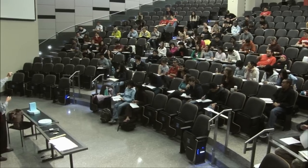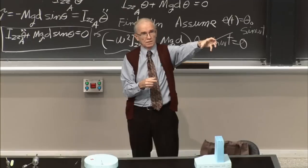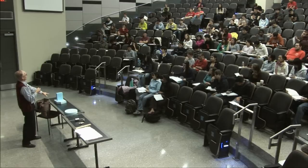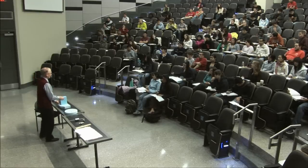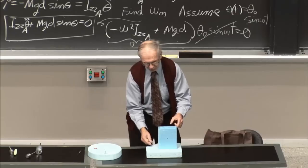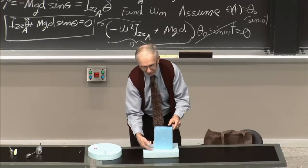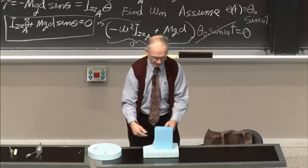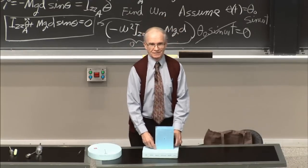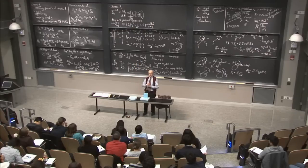Working around A — the trick is figuring out where A is. But if you realize A is right at the corner contact point, the problem becomes straightforward. Working around G, you'd have to solve for the upward normal force and friction force creating moments about G. Doing it around A — the point of contact at the corner — using the method just shown, the problem is just a piece of cake.